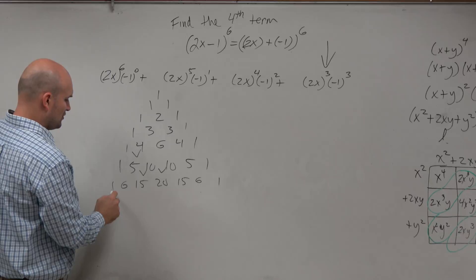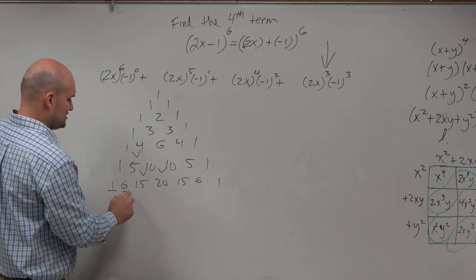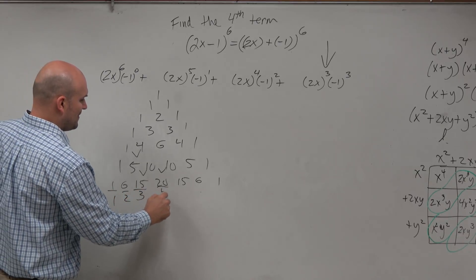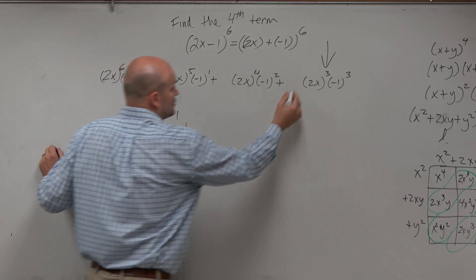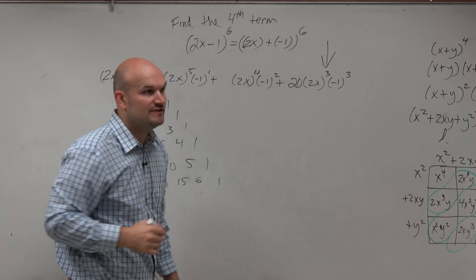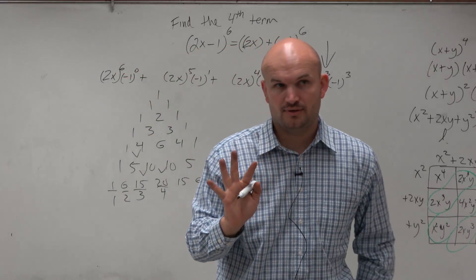So what's the fourth term? That's the first, that's the second, that's the third, that's the fourth. So 20 is my coefficient of the fourth term.